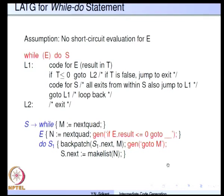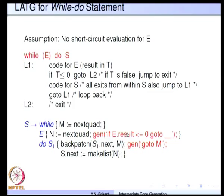Now let us see how to generate code for the while loop, which is very simple: code for E, then the test, then code for S, and go back to the loop. We remember the beginning of E with M equal to next_quad, and after E we generate the test. Then we generate the code for S1, do the back-patch of S1.next with M so all jumps out of S1 go to the beginning of the expression, and finally goto M at the end of S1 also jumps to the beginning of E. S.next will be just this quadruple. This is how we generate code for the while loop using the L-ATG.